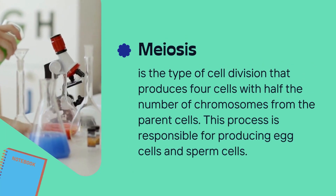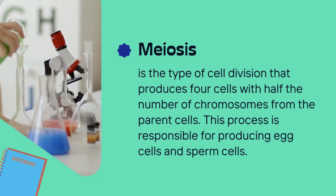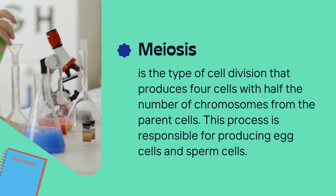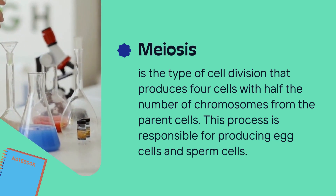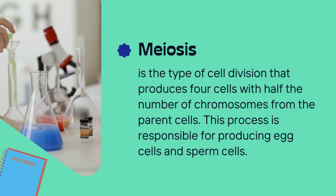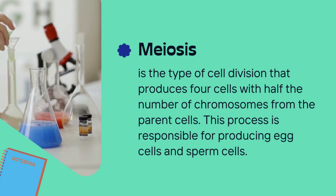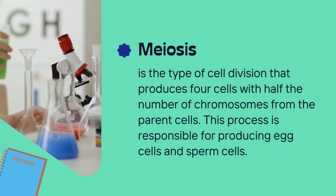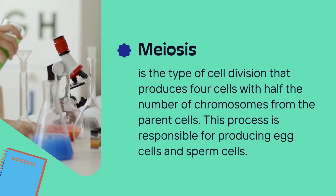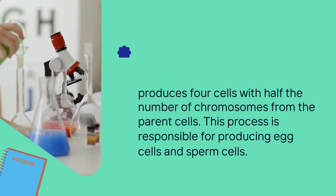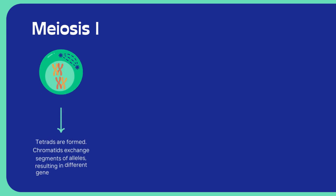On the other hand, meiosis is the process responsible for producing gametes, with half the number of chromosomes as the parent cells. Here's an overview of meiosis. Meiosis 1, Stage 1: tetrads form, exchanging segments of alleles.